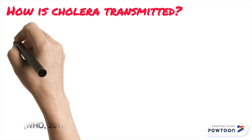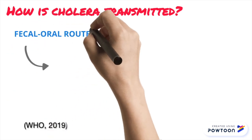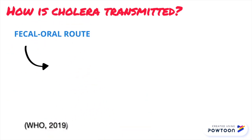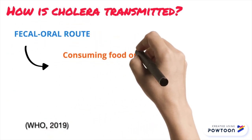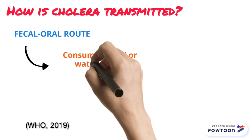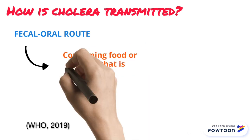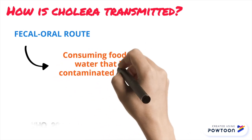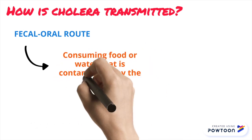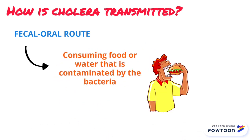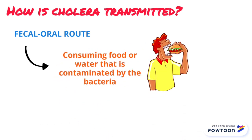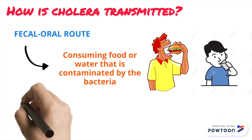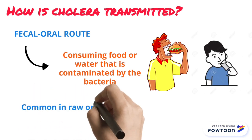The most common method of transmission is through fecal-oral transmission. This can occur through consuming food or water that is contaminated by the cholera bacteria, and is very common in raw or poorly cooked seafood.